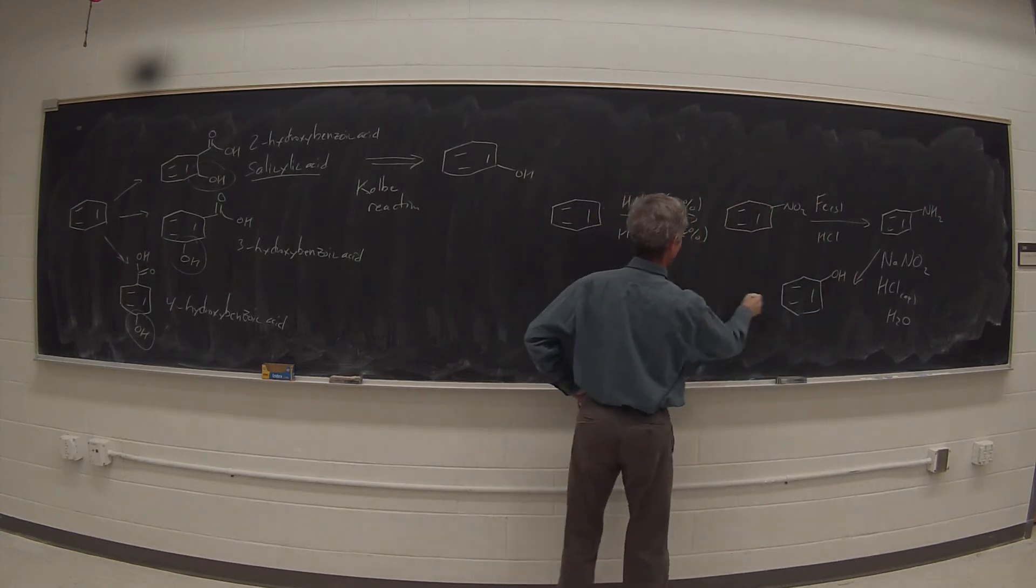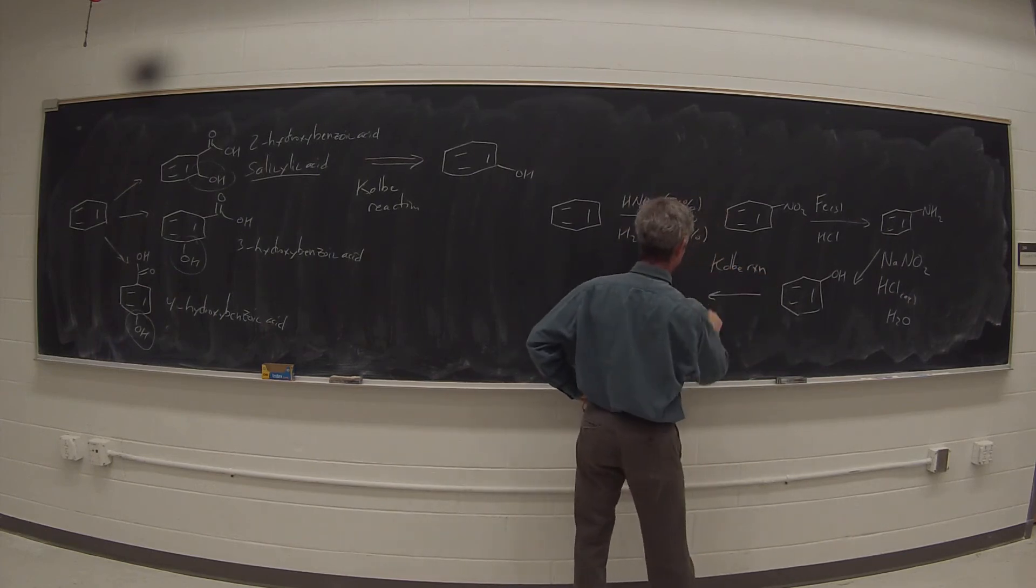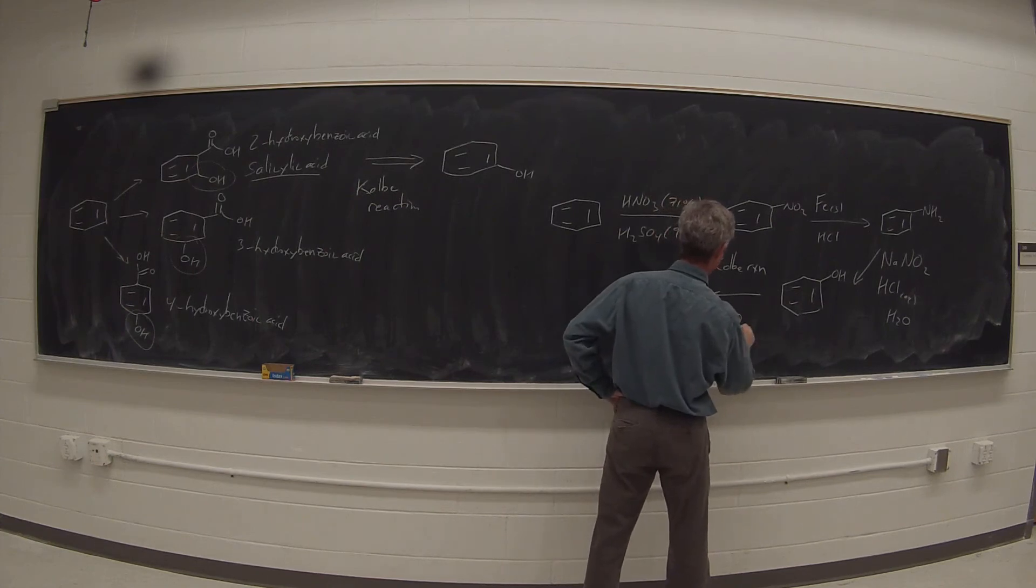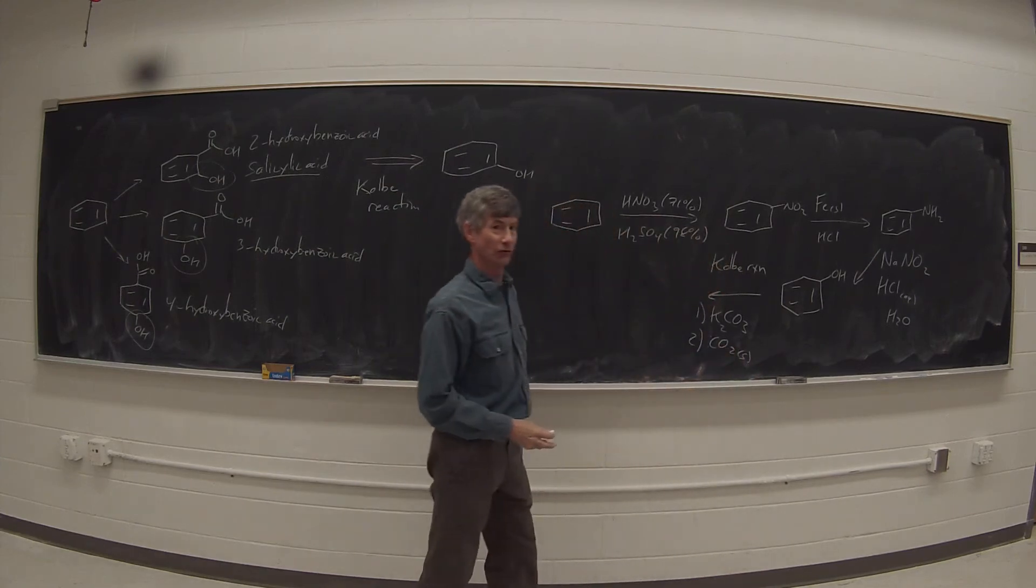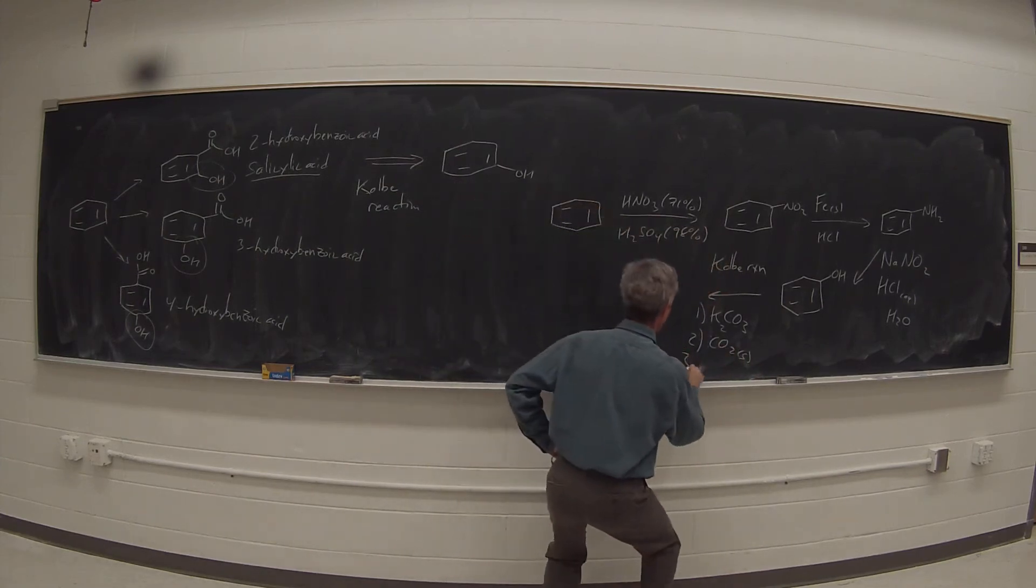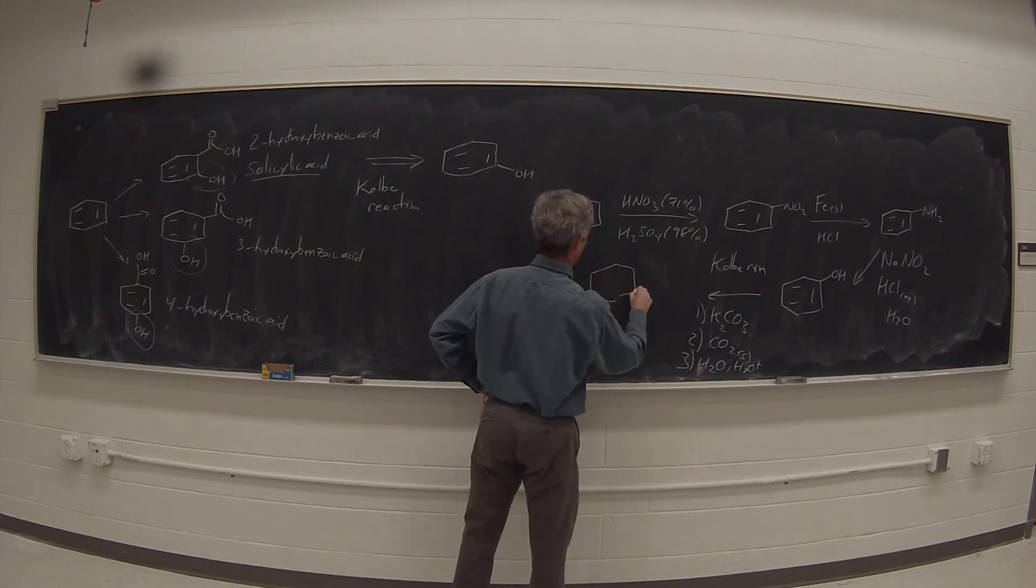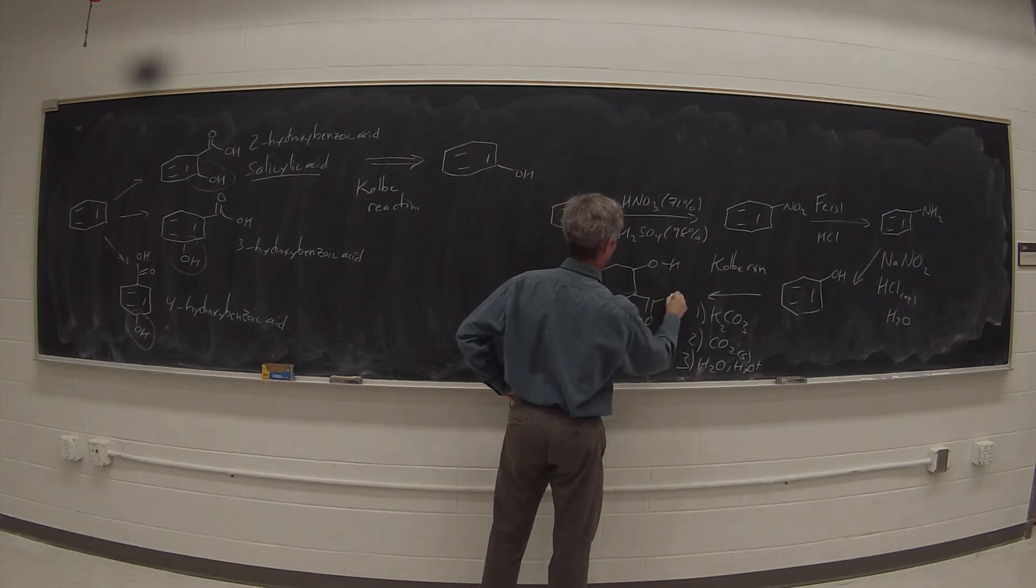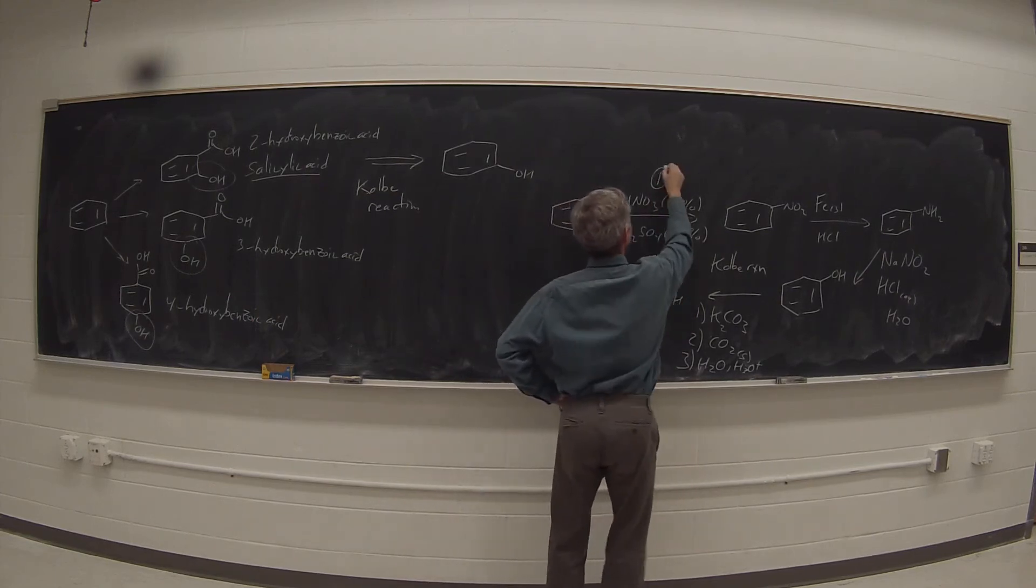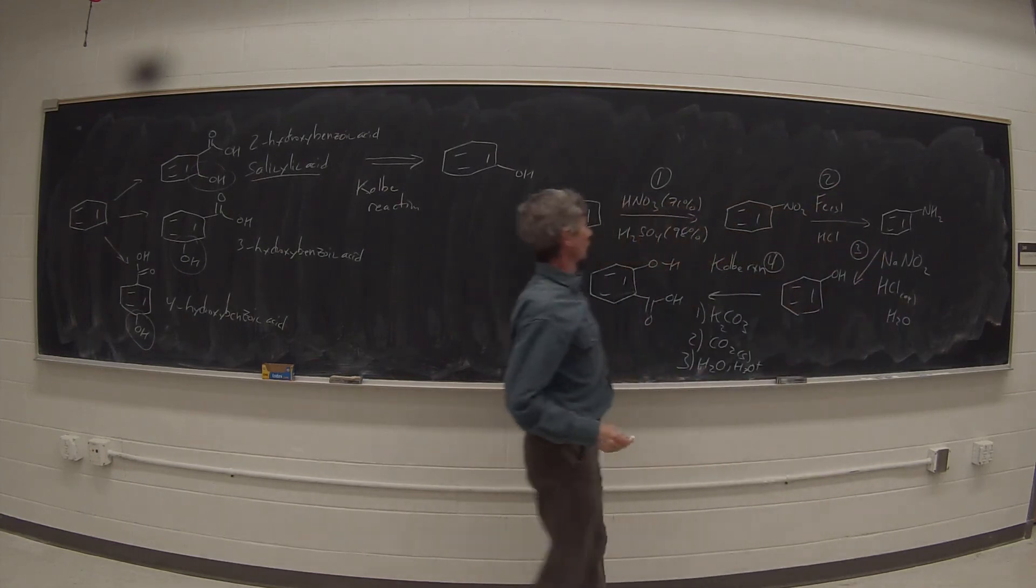And then in our last step, we'll do the Kolbe reaction which involves first treating this with potassium carbonate, K2CO3, and then reacting it with CO2, usually dry ice, CO2 solid, and then aqueous acid workup will give us salicylic acid directly. So that's a four-step synthesis.